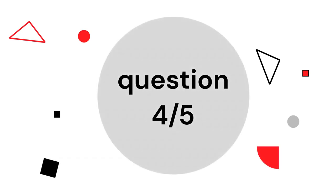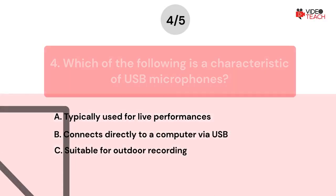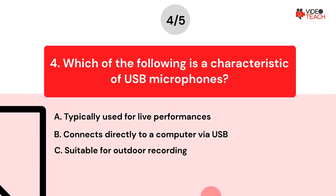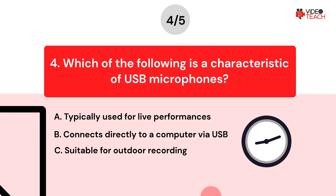Question number four. Which of the following is a characteristic of USB microphones? Option A: Typically used for live performances. Option B: Connects directly to a computer via USB. Option C: Suitable for outdoor recording. Now you have about 15 seconds to think about your answer.